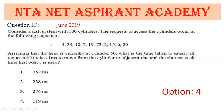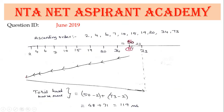Disk scheduling: requests to access cylinders in a sequence, head currently at cylinder 15. Using Shortest Seek Time First (SSTF) policy, sort in ascending order. Right side difference: 73−50=23, 50−34=16. Left side differences: 34 to 73 is 39, 34 to 20 is 14, then 7 is less. Traversal from 50 to 2: 50−2=48, plus 73−2=71, total = 119. This was asked in June 2019.